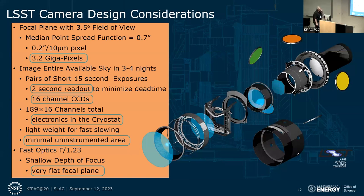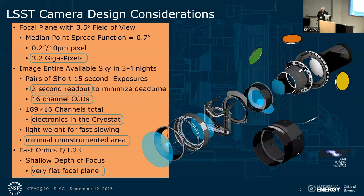The next consideration is speed. We want to see the entire available sky every few nights, which pushes you to a certain exposure length. The design uses pairs of 15-second exposures back-to-back on the same field. To minimize dead time between them, we designed a system capable of two-second readout — which is fast for CCDs. To do that, we need to multiplex, so we designed CCDs with 16 channels. Two-channel CCDs are typical; there are some four-channel models. We went to 16, to get the speed we needed in 16-megapixel CCDs.